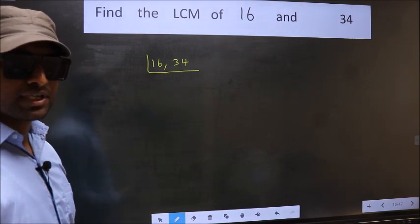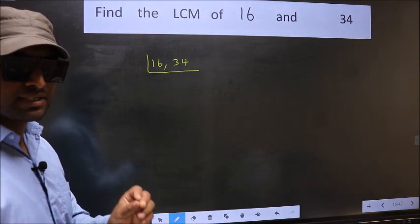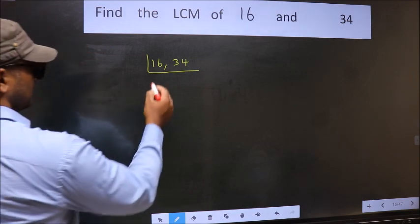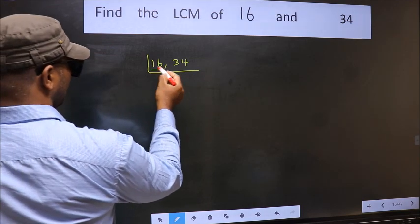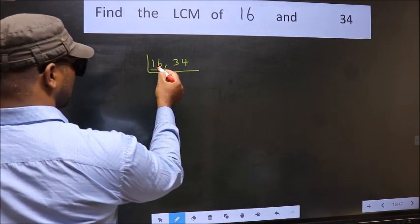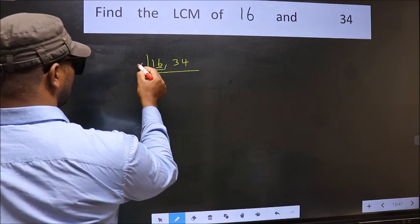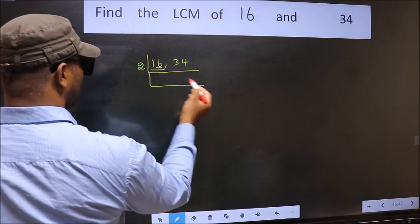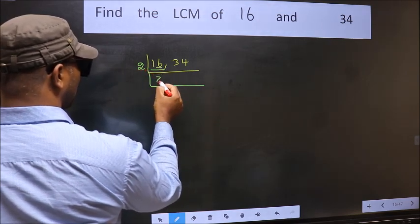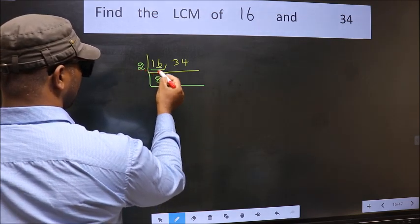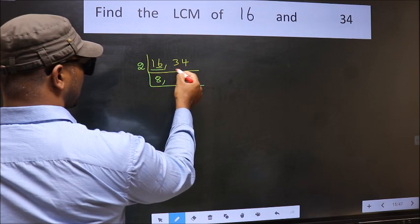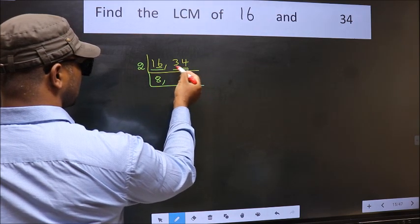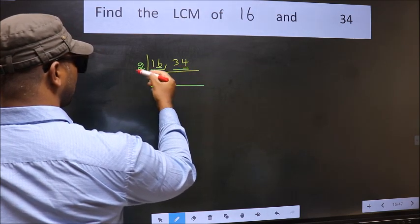Now you should focus on the first number which is 16. For this number, last digit is 6, so take 2 as the divisor. When do we get 16 in the 2 table? 2, 8, 16. The other number 34 has last digit 4, so it is also divisible by 2.